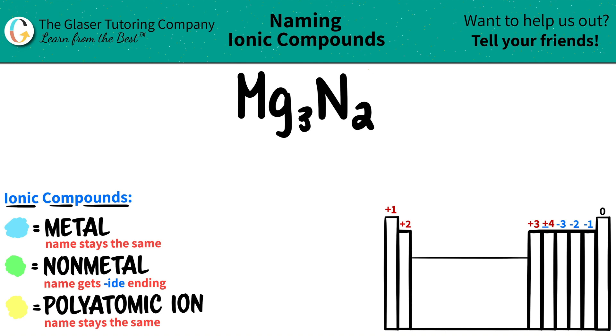Now, the first thing we need to know is why is this an ionic compound? Ionic compounds are metals plus a non-metal.